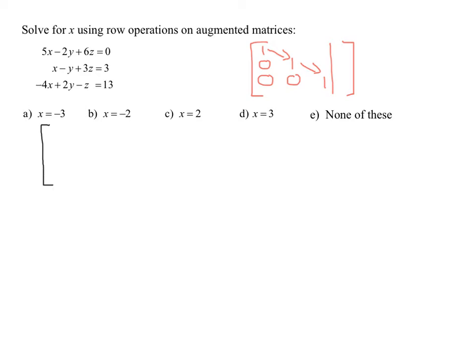We take our first equation and strip off the coefficients: 5, negative 2, 6. Then we put the vertical line and the constant on the other side — so we have 5, negative 2, 6, and the constant is 0. The next equation gives us 1, negative 1, 3, and 3. And our last equation gives us negative 4, 2, negative 1, and 13.